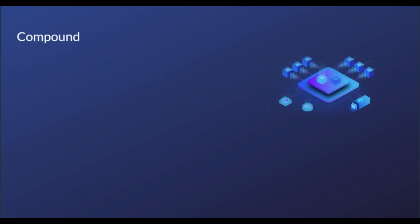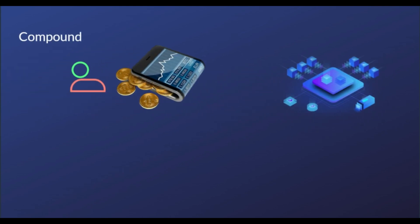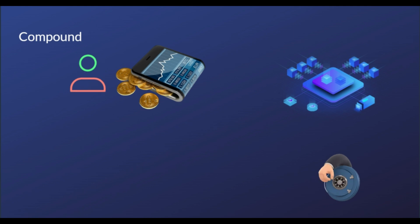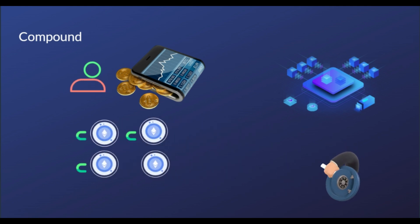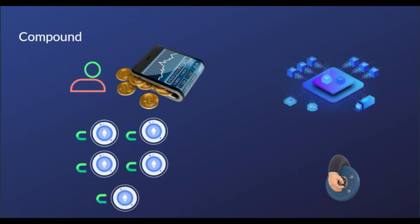Like most decentralized finance protocols, Compound is a system of openly accessible smart contracts built on Ethereum. When a user locks in funds on the lending side of the Compound Protocol, they receive C tokens — or digital assets — representing the amount that they have deposited. Examples of C tokens include CETH, CBAT, and CDAI.